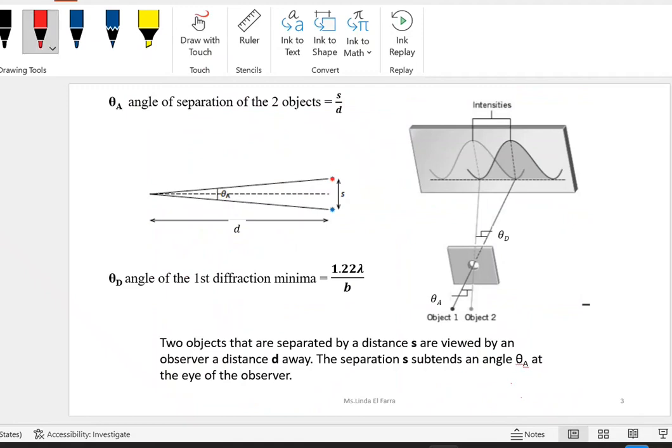Theta A is the angle of separation between these two objects. So, if I have two stars, the distance between them is S. And here is the observer. It's me. I'm watching these stars by my own eye or by telescope. So, the distance between the observer and these two stars is small d. This theta, if I take tan, tan, the angle is opposite over adjacent.